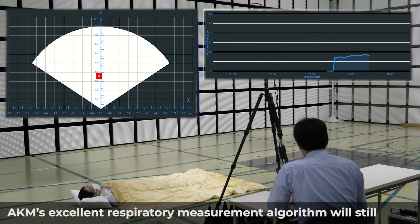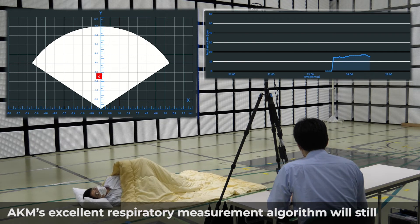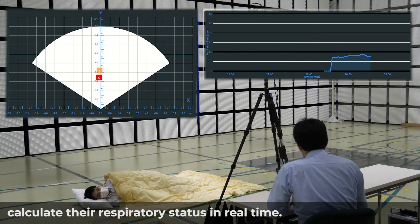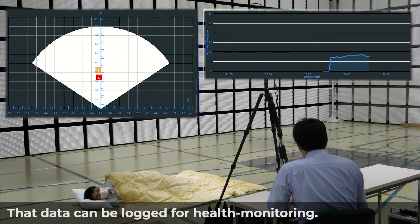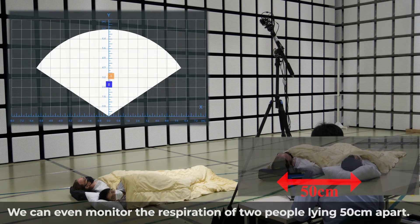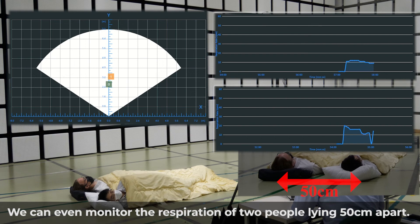If the subject turns over while sleeping, AKM's excellent respiratory measurement algorithm will still calculate their respiratory status in real time. That data can be logged for health monitoring. We can even monitor the respiration of two people lying 50 centimeters apart.